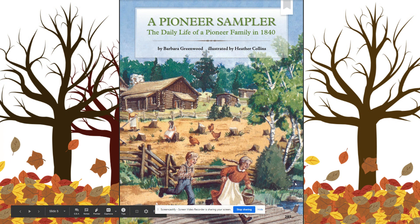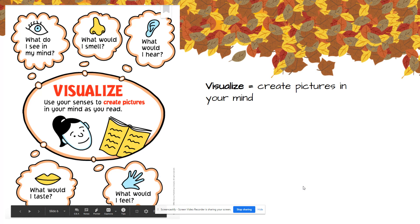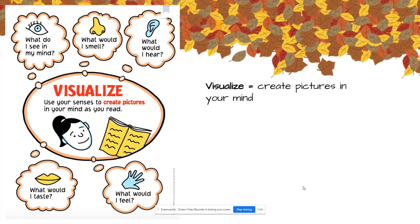Yesterday, we started reading a historical fiction title titled A Pioneer Sampler by Barbara Greenwood. We talked about how readers visualize and understand what life was like back then for the pioneers. As you read historical fiction text, remember that good readers try to visualize or create pictures in their mind to help them understand details about what life was like at a time in history. When readers visualize, they use information from all five senses to help them create pictures in their minds. You can use the words the author is writing to see what the author is describing in your mind.